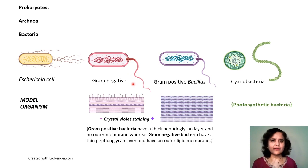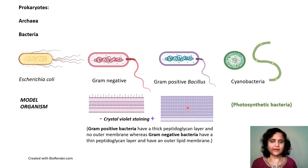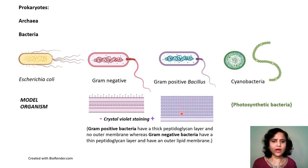There are two types of bacteria based on their staining properties: gram-negative or gram-positive, which refers to their staining by crystal violet. Gram-negative bacteria give a light pink color, whereas gram-positive ones are stained purple because they have a thick peptidoglycan layer and no outer membrane. Gram-negative bacteria have a very thin peptidoglycan layer and also have an outer lipid membrane.